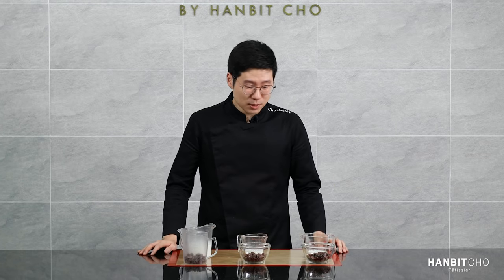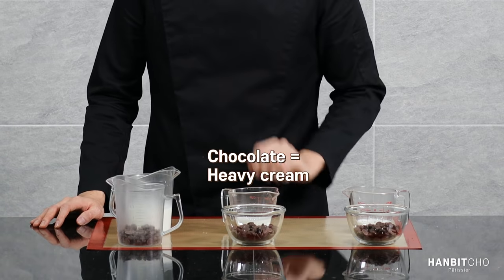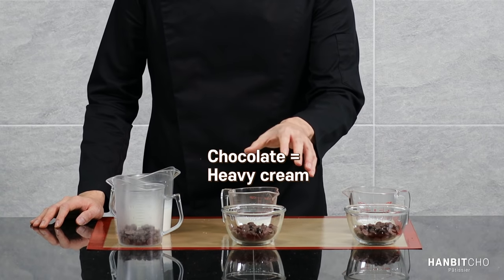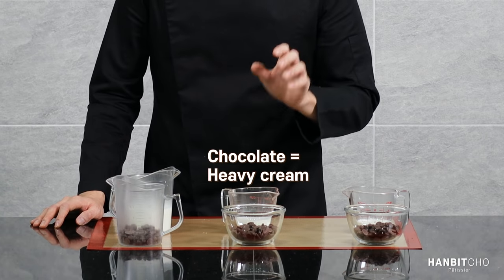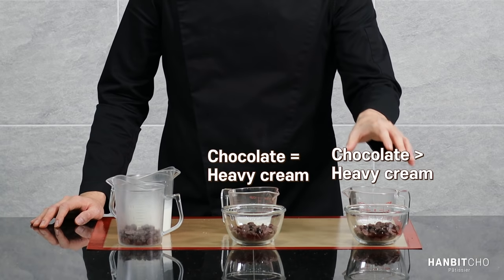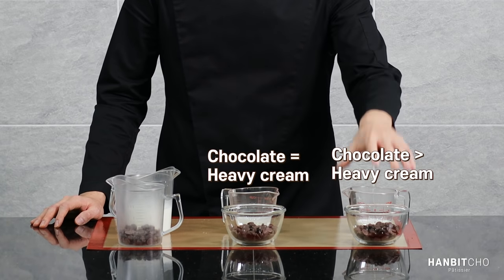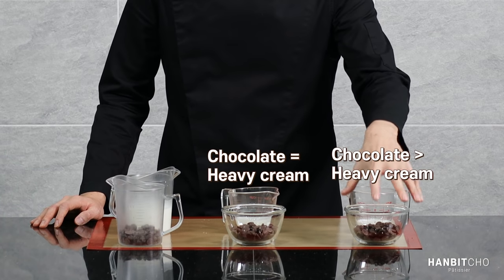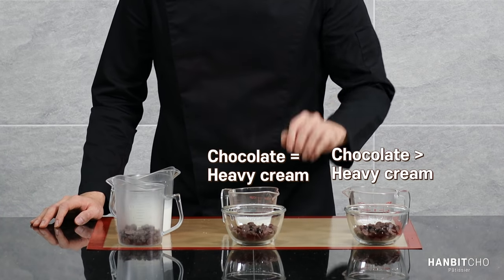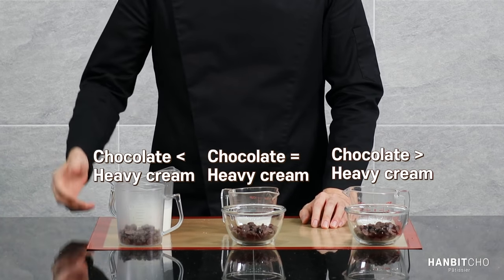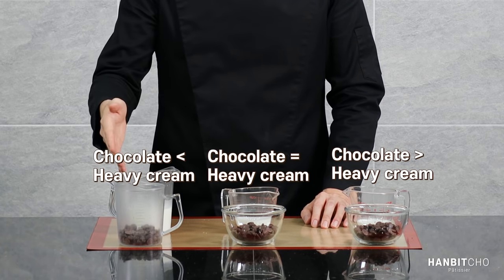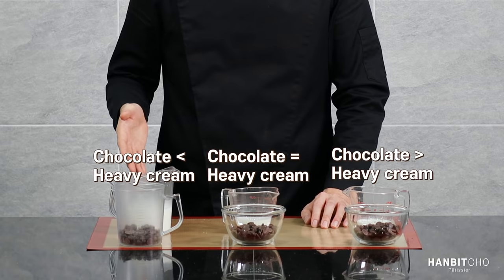Here I have three different types of ganache set up by their different ratios. In the middle is a 1-to-1 ratio of dark chocolate and heavy cream. Here we have a 2-to-1 ratio — so half the amount of heavy cream relative to the dark chocolate. And here we have the whipped ganache — one part chocolate and three parts heavy cream.